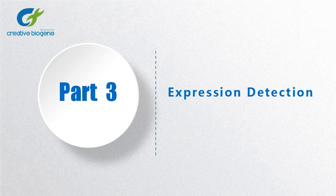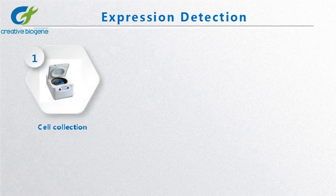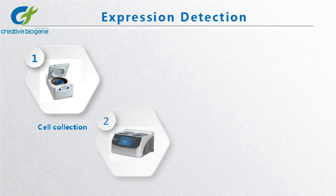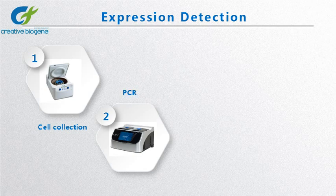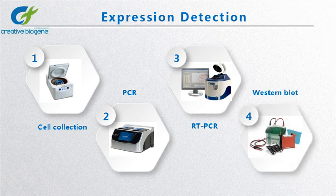Part 3: Expression Detection. Collect cultured cells, break up the cells through ultrasound or enzymatic hydrolysis, and the supernatant is obtained by centrifugation. The detection of mRNA expression level and protein expression level are conducted. The cDNA is analyzed with real-time PCR or reverse transcription PCR, and proteins are extracted for western blot analysis.